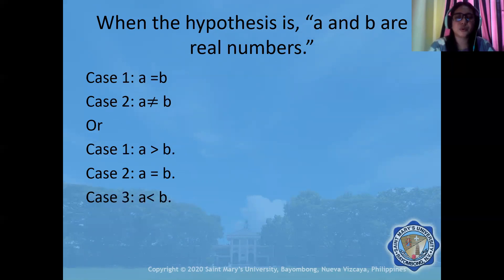When the hypothesis is a and b are real numbers, we need to consider case one: a equals b, or case two: a not equal to b. We can also split this as case one: a greater than b, case two: a equals b, case three: a less than b.